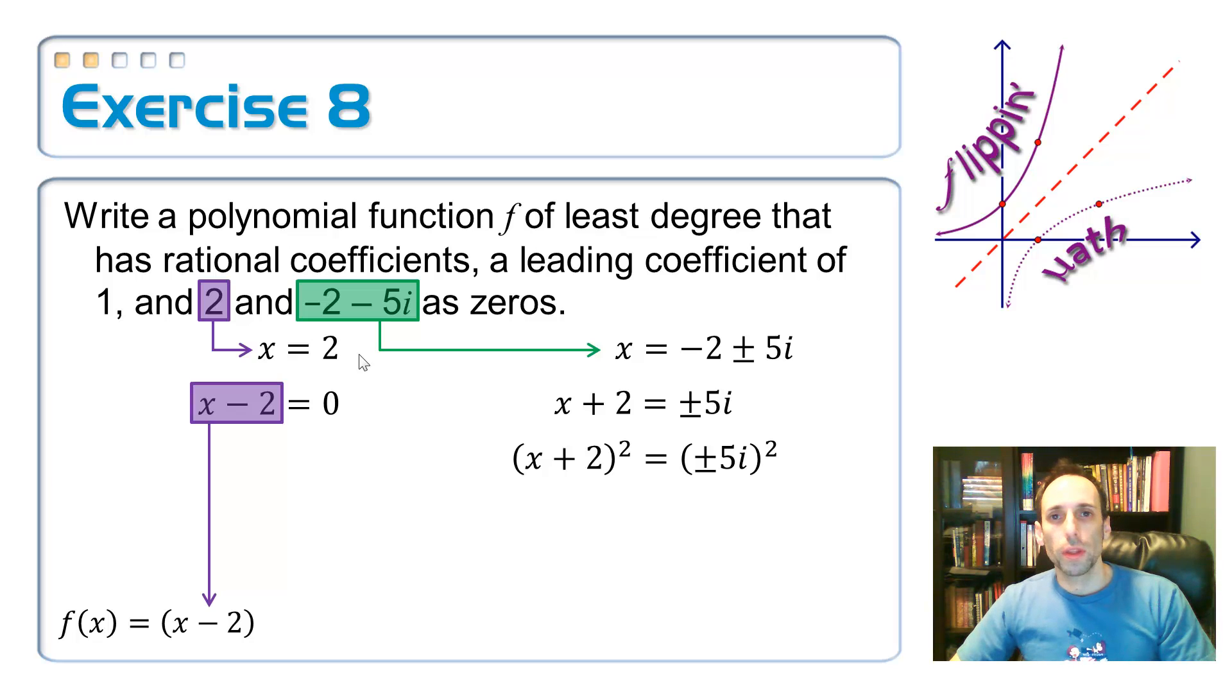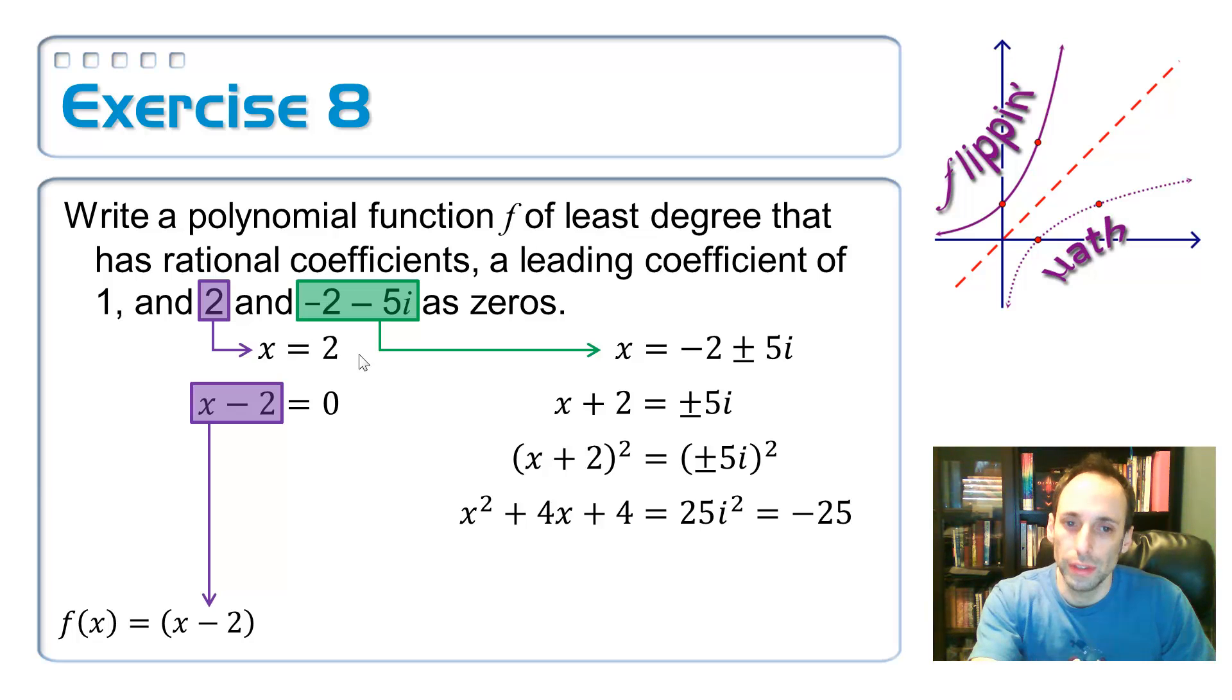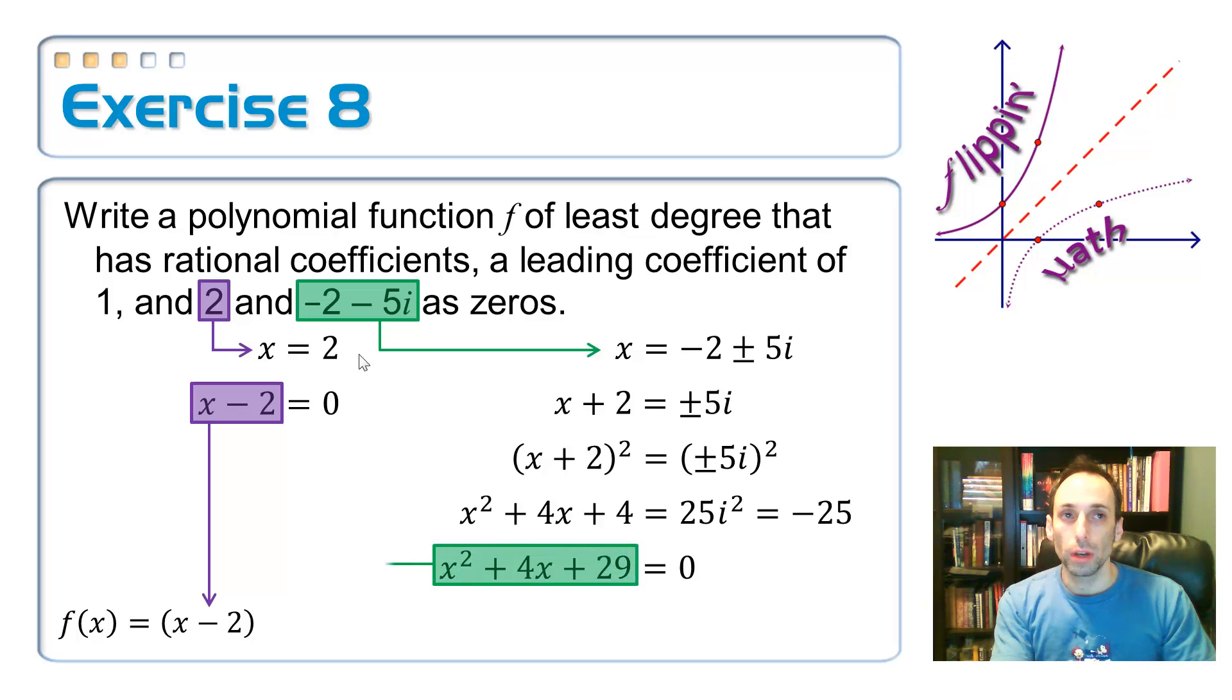So on the left side, when I square the binomial, x squared plus 4x plus 4. And on the right-hand side, 25i squared. What's i squared? It's negative 1. So that means it's negative 25. And then the last thing is take that negative 25, add it to the other side. So your final other factor is x squared plus 4x plus 29.